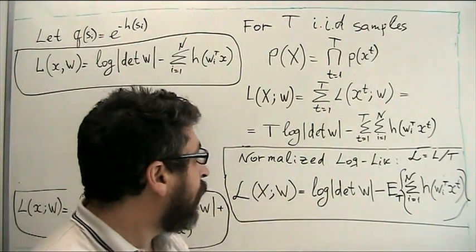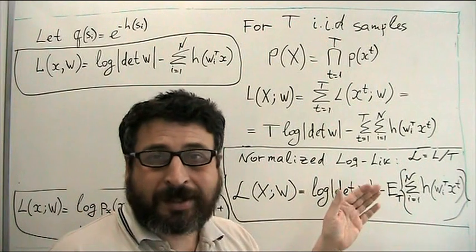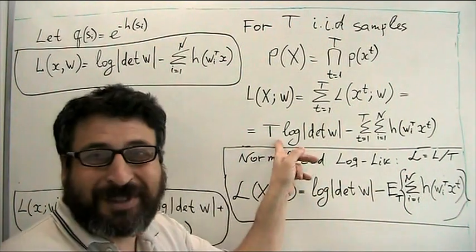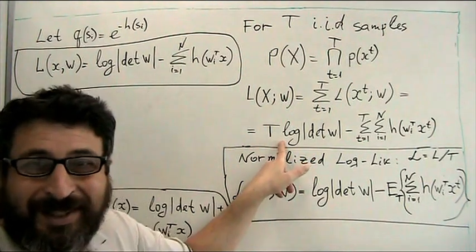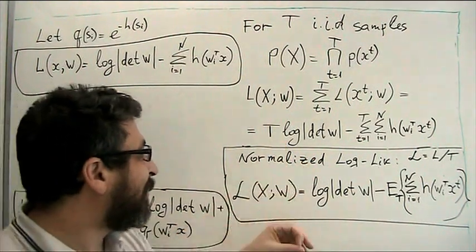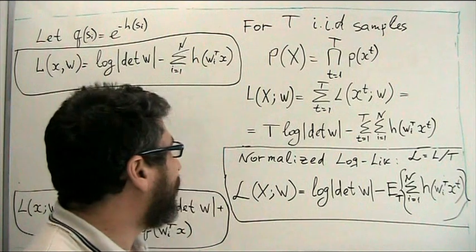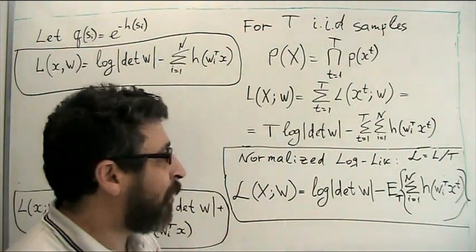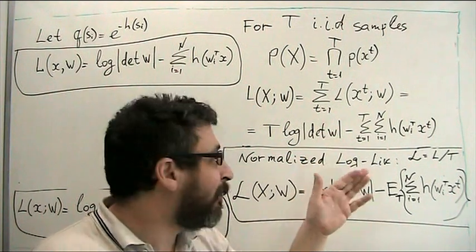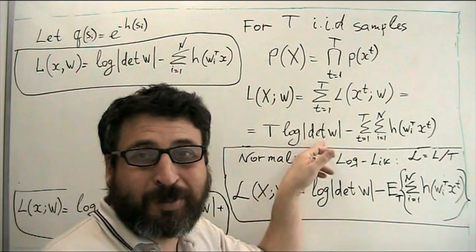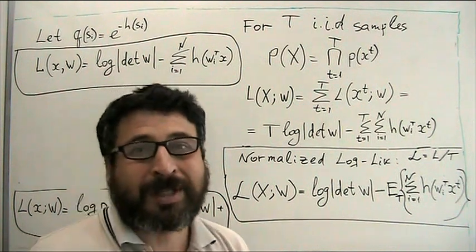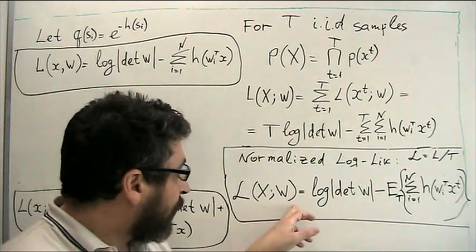And then, one more convenient step. We don't like functions which go to infinity when t goes to infinity. So, we normalize our likelihood. We divide it over t because it doesn't matter. We are looking for its maximum over w. So, if we divide it over t, the maximum doesn't change.